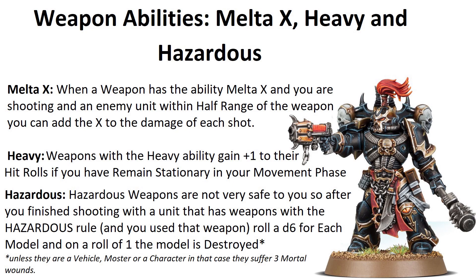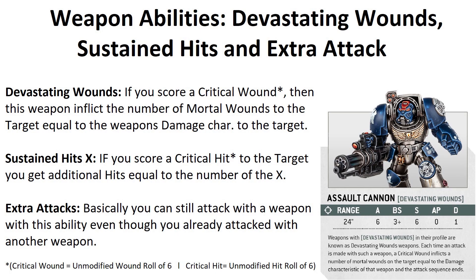So it's not the safest weapon, but usually these weapons have really great strength, damage, or armor penetration — high risk, high reward. Devastating Wounds: if you roll a critical wound — a wound roll of 6 — your opponent cannot make saving throws, because the damage caused by this weapon turns into mortal wounds equal to the damage characteristic of the weapon.